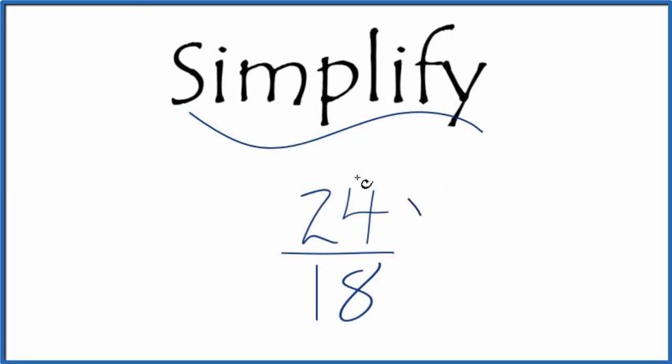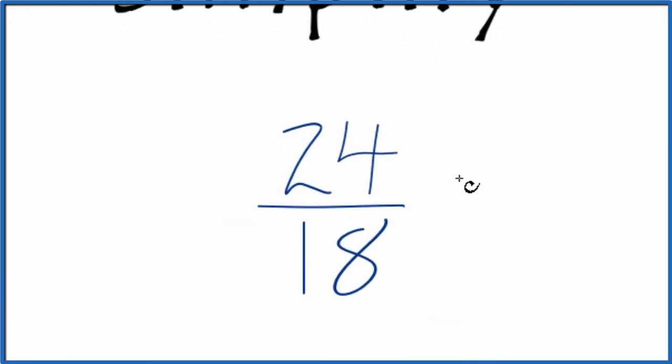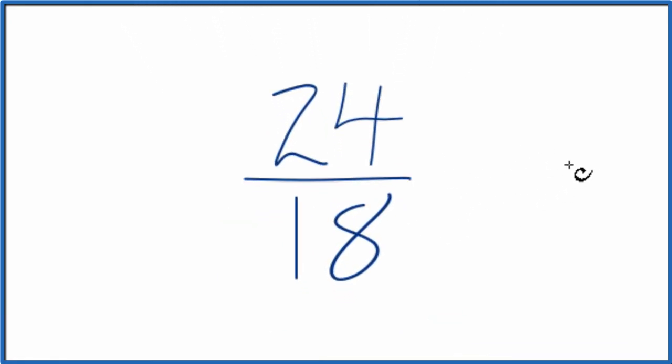If you need to simplify the fraction 24 18ths, here's how you can do that. What we're trying to do is find another fraction that's equivalent. It has the same value as 24 divided by 18, it's just that we have it in lowest terms.